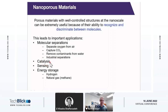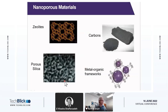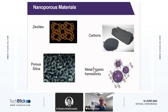Porous materials are also used in catalysis and sensing. And what I'm going to talk about as an example application today is storing high energy molecules like hydrogen or natural gas, which is mostly methane. There are a variety of porous materials available — things like zeolites and activated carbons are already widely used in industry, you can make porous silica, and the class of materials I'm going to talk about are known as metal organic frameworks or MOFs.